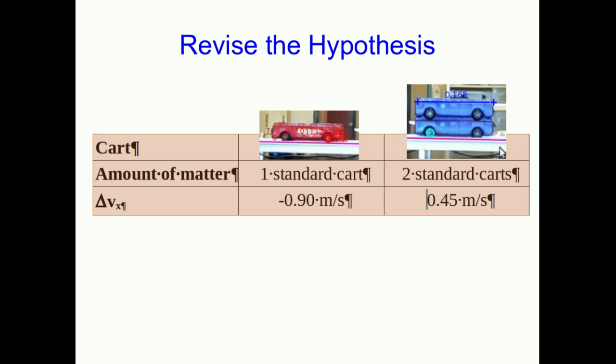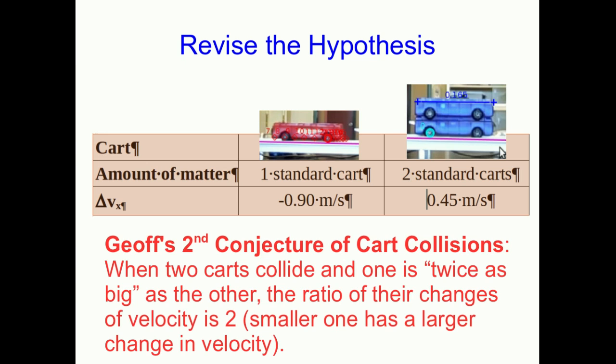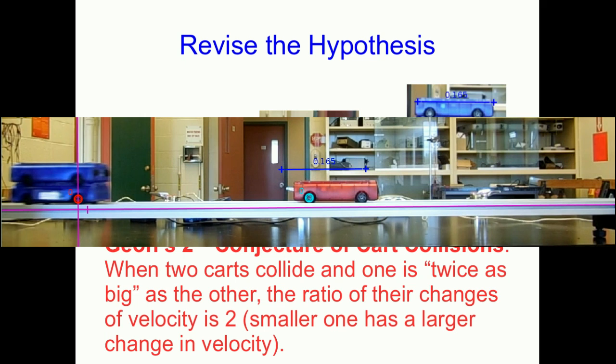So I'm going to revise my hypothesis. Look, the single cart had twice the delta V that the double cart did. So I'm going to make that a new hypothesis. My second conjecture of cart collisions: when two carts collide and one is twice as big as the other, the ratio of their changes of velocity is two, with the smaller one having the larger change in velocity. So we can test that hypothesis.